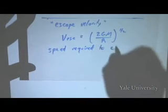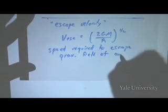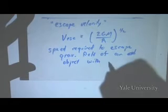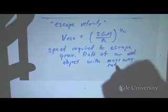And this is the speed required to escape the gravitational field of an object, supposing that the object has mass equal to M and radius equal to R.